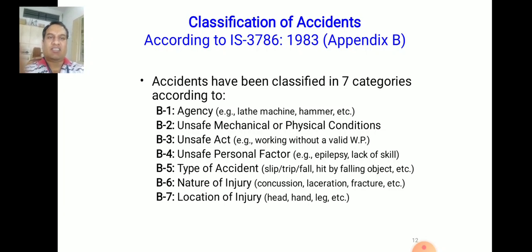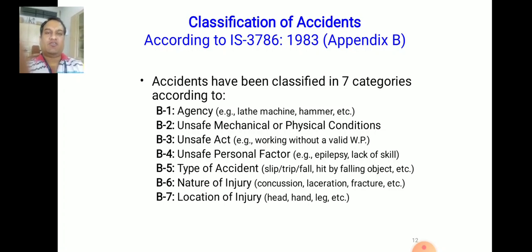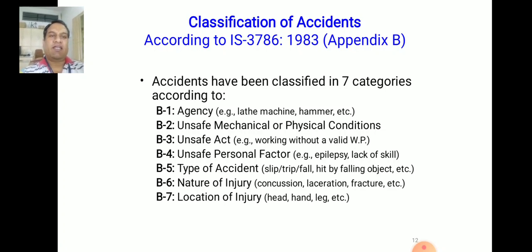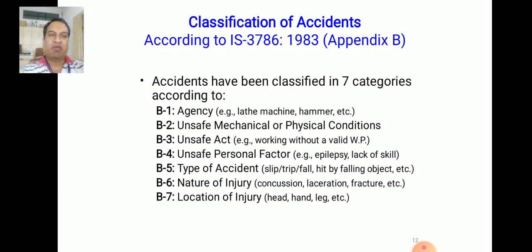Accident classification in IS 3786 has seven categories, B1 to B7, covering: agency-wise, unsafe mechanical or physical condition-wise, unsafe act-wise, unsafe personal factor-wise, type of accident-wise, nature of injury-wise, and location of injury-wise. Agency-wise means the tool or machinery due to which the accident happened — for example, a lathe machine, hammer, or other tools.